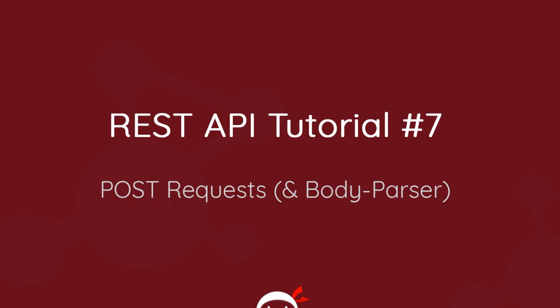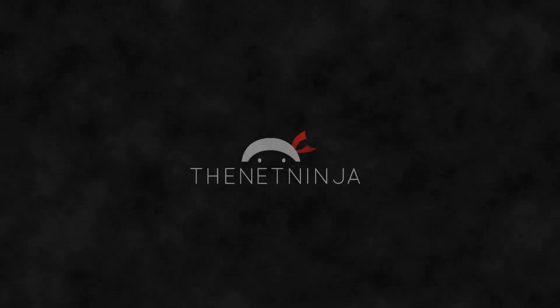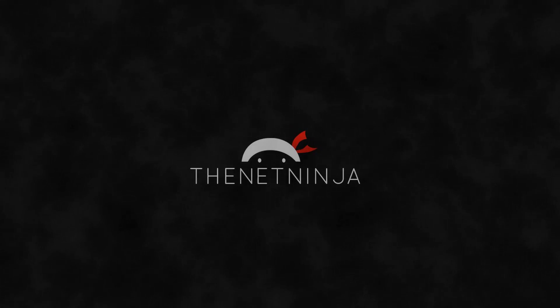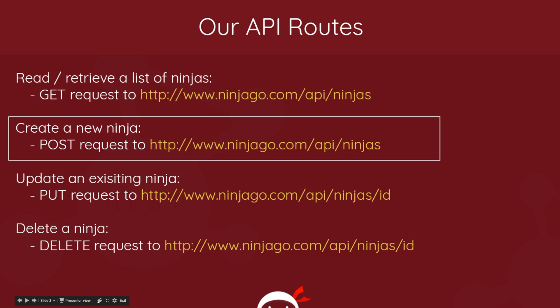Welcome to your seventh REST API tutorial. In this video I want to talk about POST requests and body parser. We're now in a position where we've created our four basic route handlers: one for GET requests, one for POST, one for PUT, and one for DELETE requests. In this video I want to focus on the POST request.